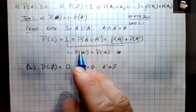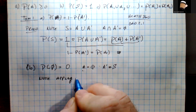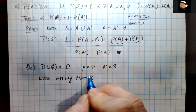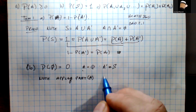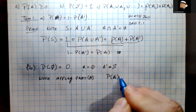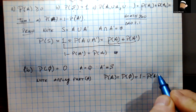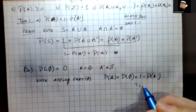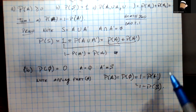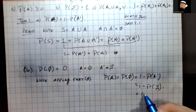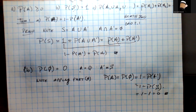Applying the result from part A directly: P(A) — which is P(∅) — equals one minus P(A-complement). But A-complement is S, so this is one minus P(S). By property B, P(S) equals one, so this is one minus one, which equals zero — which is exactly what we wanted to show.